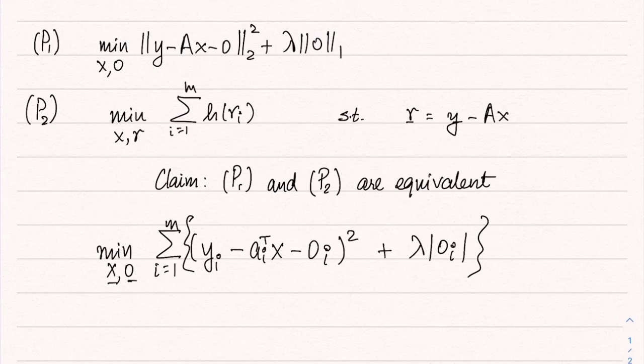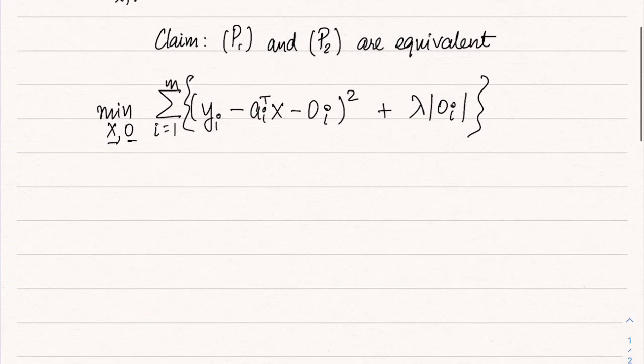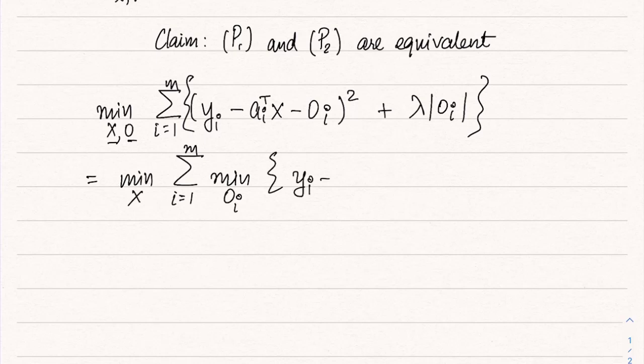This is minimization with respect to X and O both. But observe that there are no constraints on O and the problem is actually separable in each of the O_i's. So the problem can be written as minimization over X, sum over i from 1 to M, minimization over O_i, and then the objective function which is (y_i minus a_i transpose X minus O_i) squared plus lambda times absolute value of O_i.